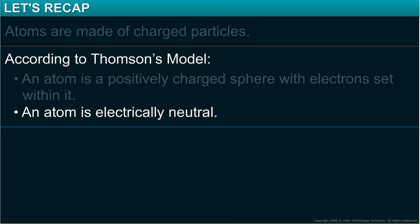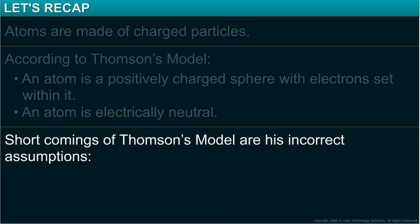Shortcomings of Thomson's model are his incorrect assumptions: electrons are embedded in positive charge, and positive charge in the atom holds the negatively charged electrons.